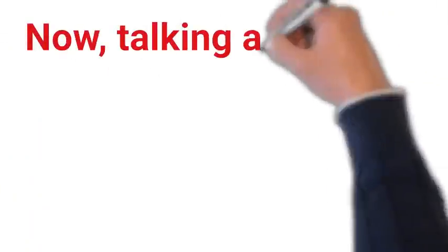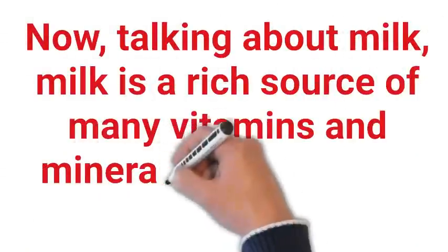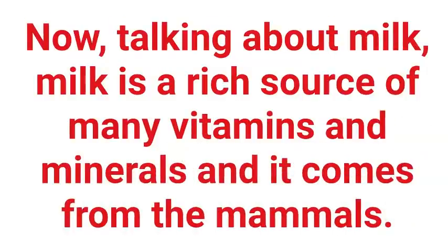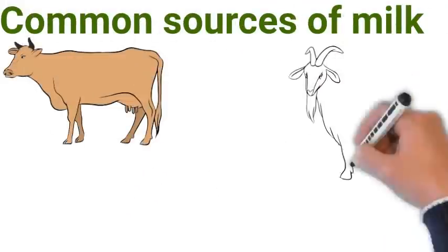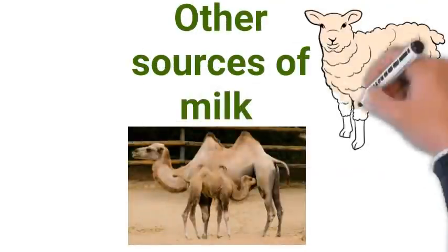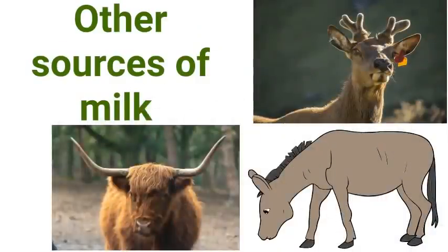Talking about milk — milk is a rich source of many vitamins and minerals and it comes from mammals. Cows, goats and buffaloes are the common sources. However, some other mammals like camels, sheep, horses, donkeys, reindeer and yaks are less common sources of milk.